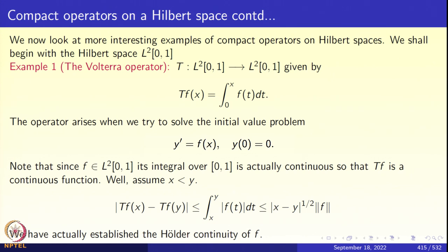Assume x is less than y. Then mod T(f)(x) minus T(f)(y) is less than or equal to the integral from x to y of mod f(t) dt. Applying the Cauchy-Schwarz inequality gives root of mod(x-y) times the L2 norm of f. Since we are looking at the unit ball where norm f is at most 1, we get mod T(f)(x) minus T(f)(y) less than or equal to square root of mod(x-y). So T(f)(x) is Hölder continuous of exponent 1/2.